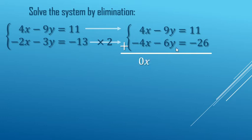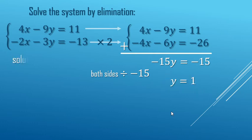0x's. Negative 9 minus 6, negative 15y. 11 minus 26, negative 15. Here's where we eliminated the x's. Now we go ahead and divide both sides by negative 15 to solve for y. Y equals 1.